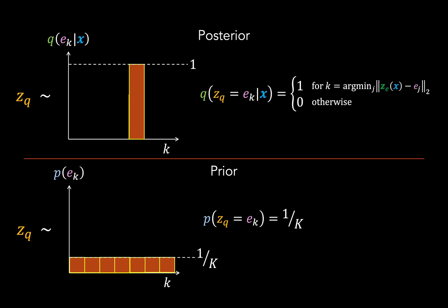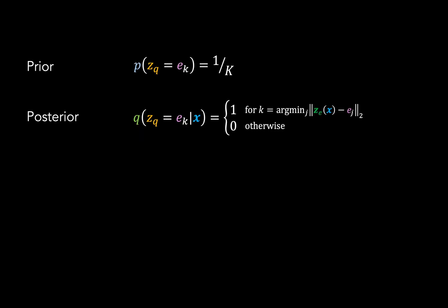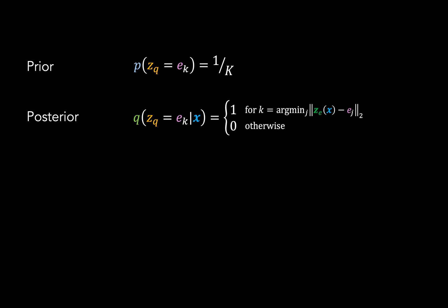So given this prior and posterior, it's now possible to calculate our KL divergence. First, we take our KL divergence formula for discrete variables. Then we apply this over all codebook indices k. Now the posterior is zero for all but the nearest neighbor. And for this, it's equal to one. So we can write this as simply log one over one over big K, or just log big K. So basically, our KL divergence is a constant that just depends on the codebook size big K. As such, it never features in our training objective.